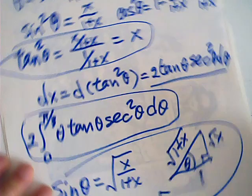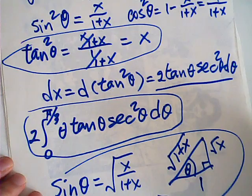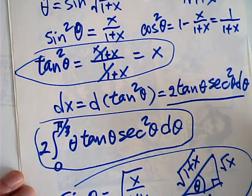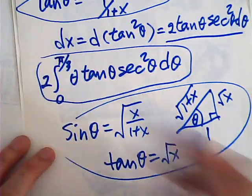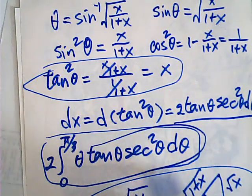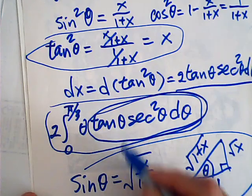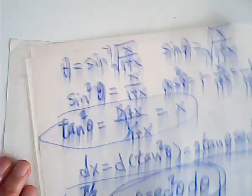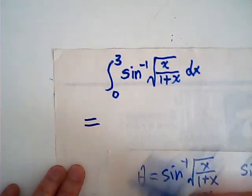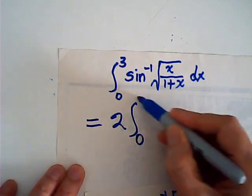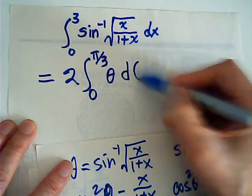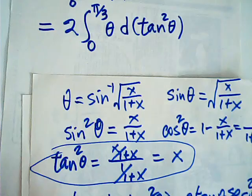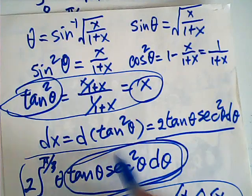Let's come back to this integral. How do we integrate this? We don't have to expand — this 2 tangent theta secant squared theta is nothing but the derivative of tangent squared theta. So this is equal to 2 times the integral from 0 to pi over 3 of theta d(tan² theta), because x equals tan² theta and dx equals d(tan² theta). We don't have to expand this.